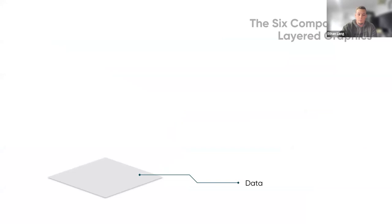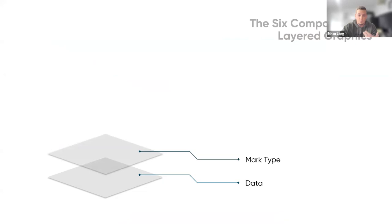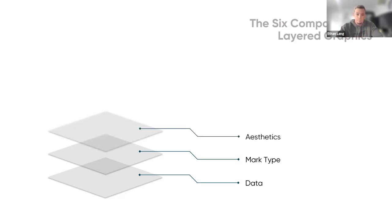The first layer is the data layer. This is where you find data and connect to it. If we think about Tableau, the first thing it does when you open it up is ask you to connect to data — so this is truly the first step in creating a data visualization. The next is choosing a mark type: once you have your data, how do you want to encode it into the view? Tableau does a great job of guiding us through this process — once we connect to data, we can just drag in a few pills and Tableau will automatically build a visualization.